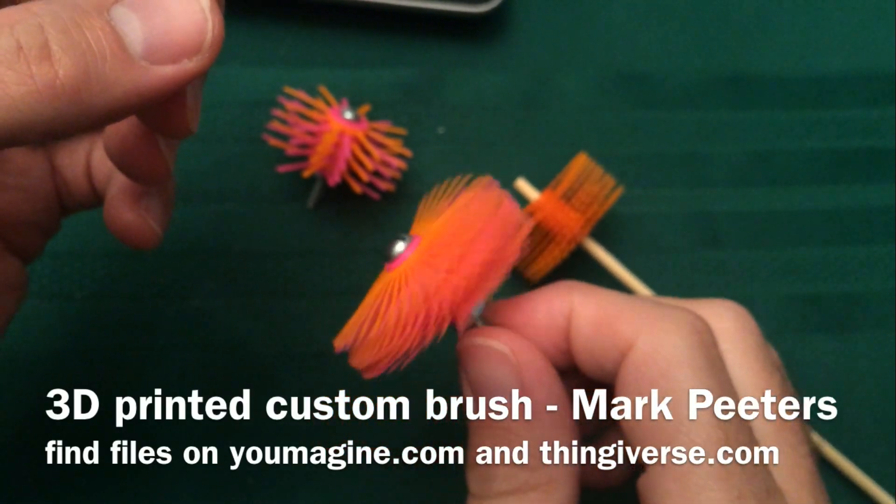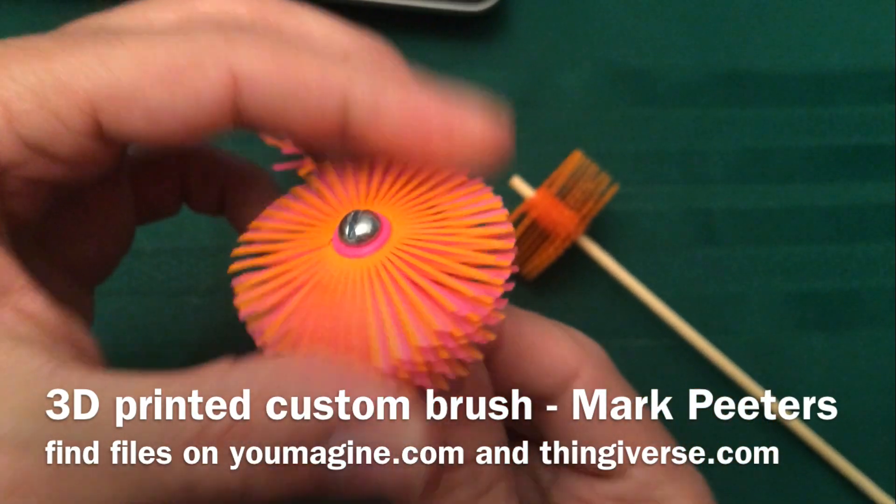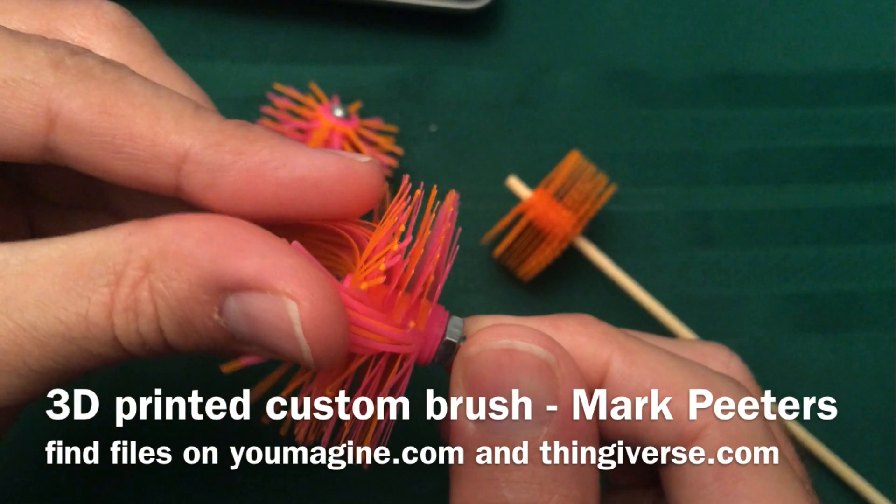These are the three different brush thicknesses I printed. This is the thinnest one. It's only like 0.2 layer thick on the bristles.